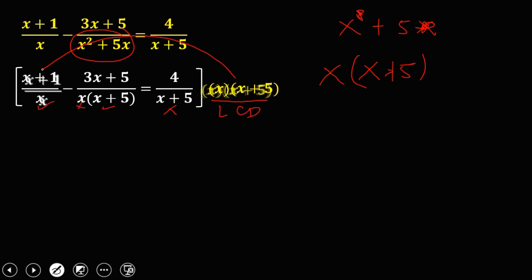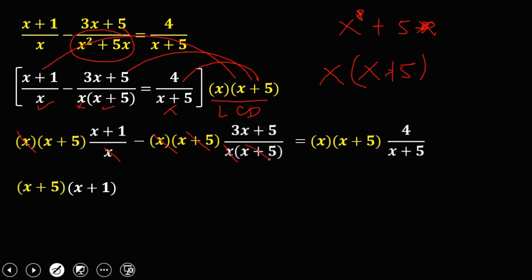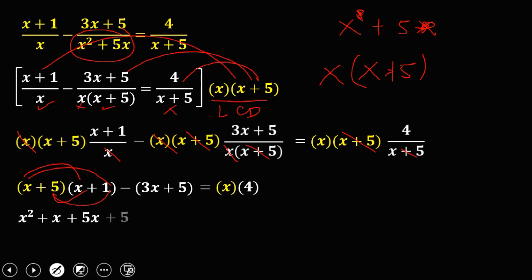Distribute the LCD to every term, then minus to the second term, equals the third term. Simplify: cancel factors to get x plus 5 and x plus 1, then cancel x, cancel x plus 5, giving 3x plus 5. Cancel x plus 5 again, leaving x times 4. Apply the FOIL method: x times x is x squared, x times 1 is x, 5 times x is 5x, and 5 times 1 is 5. On the second term, distribute the negative: negative 3x, negative 5, and x times 4 is 4x.